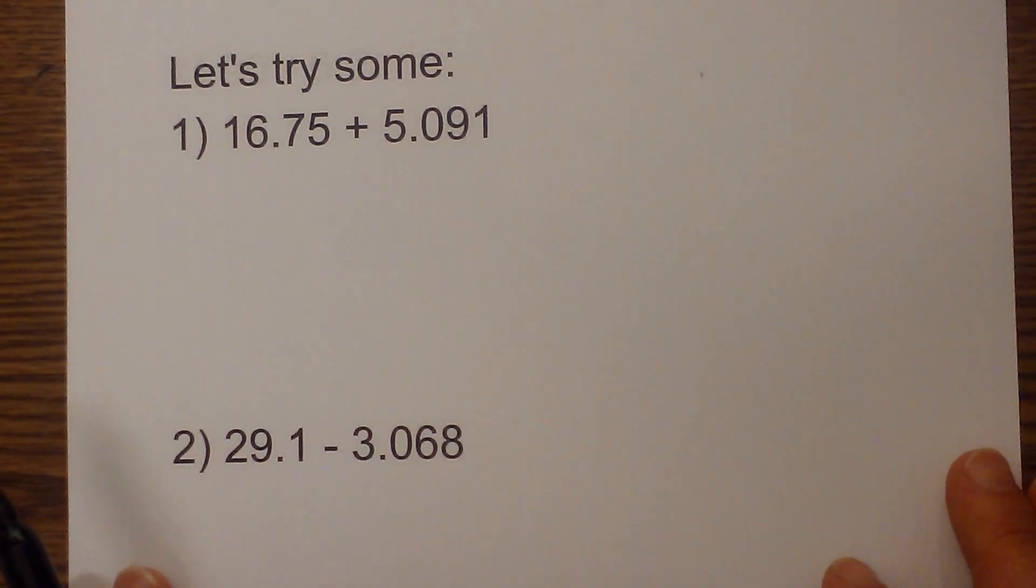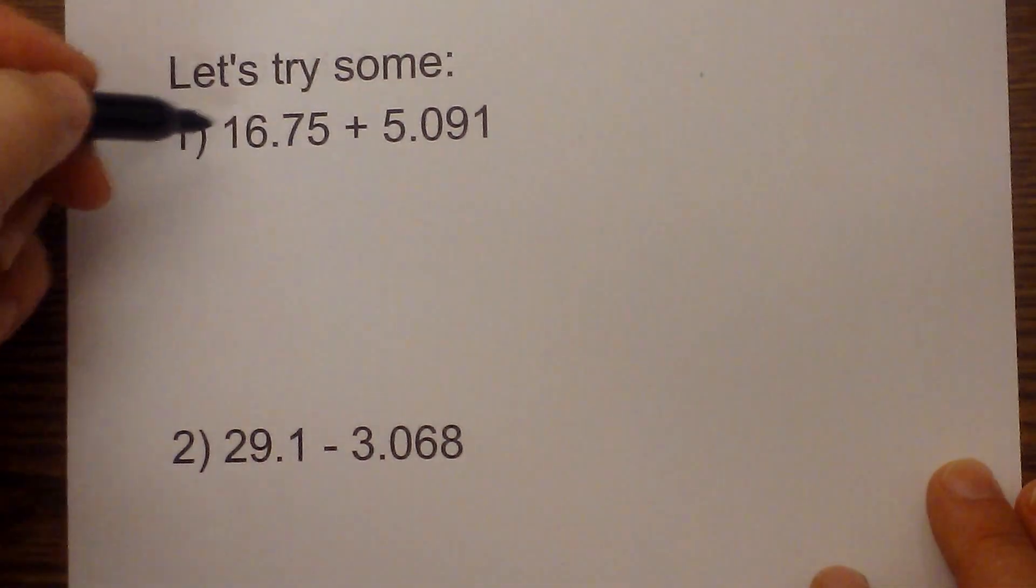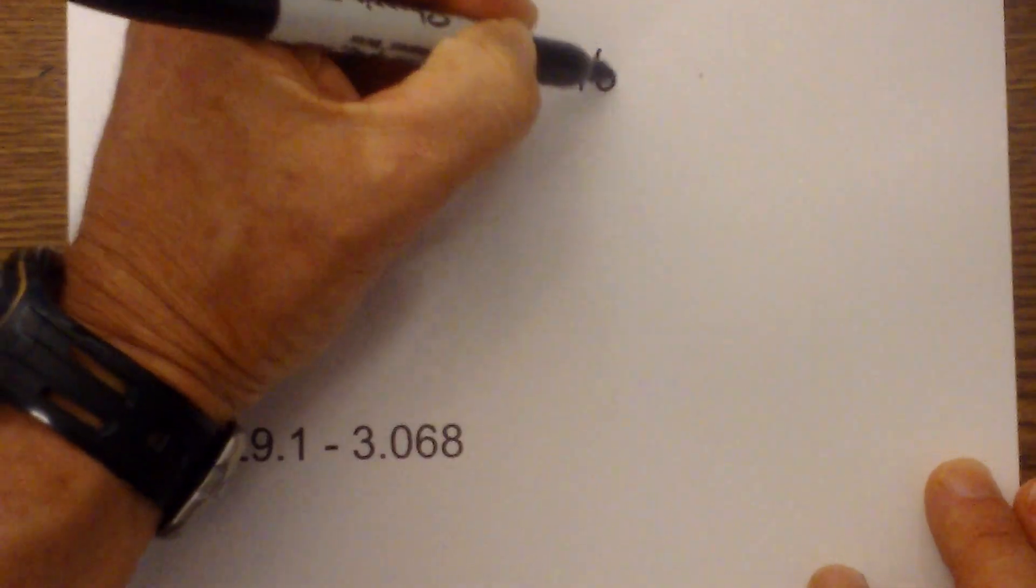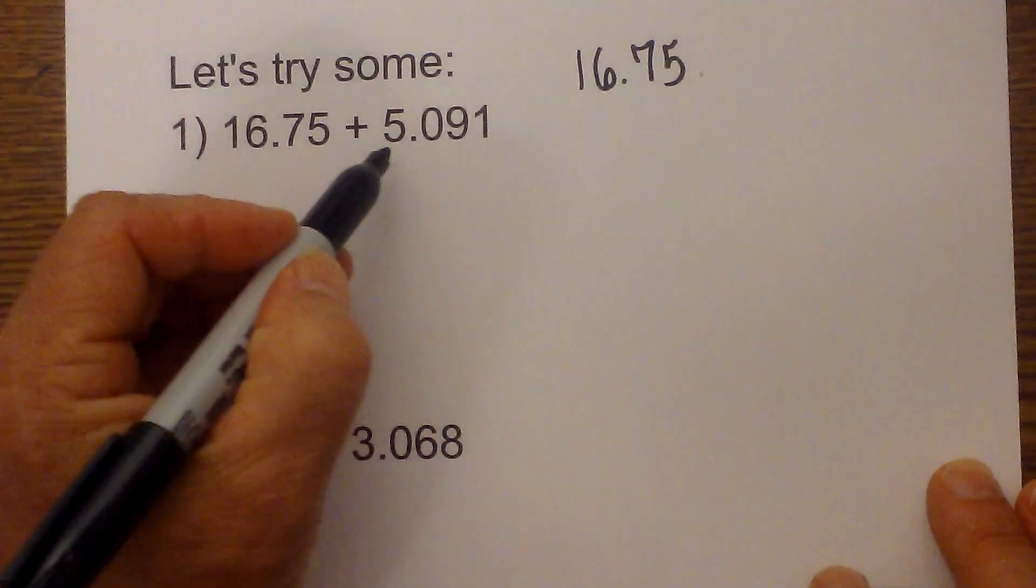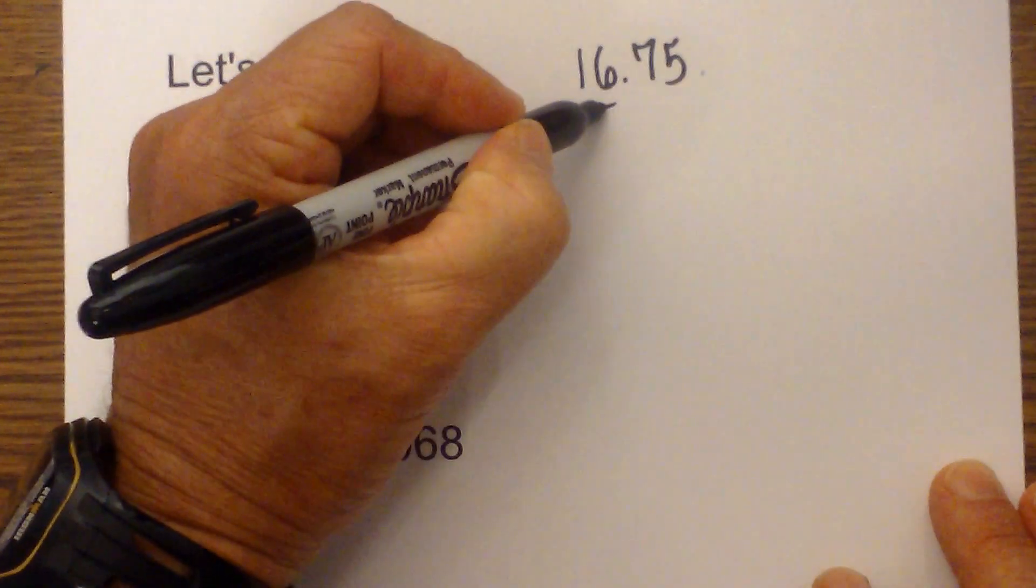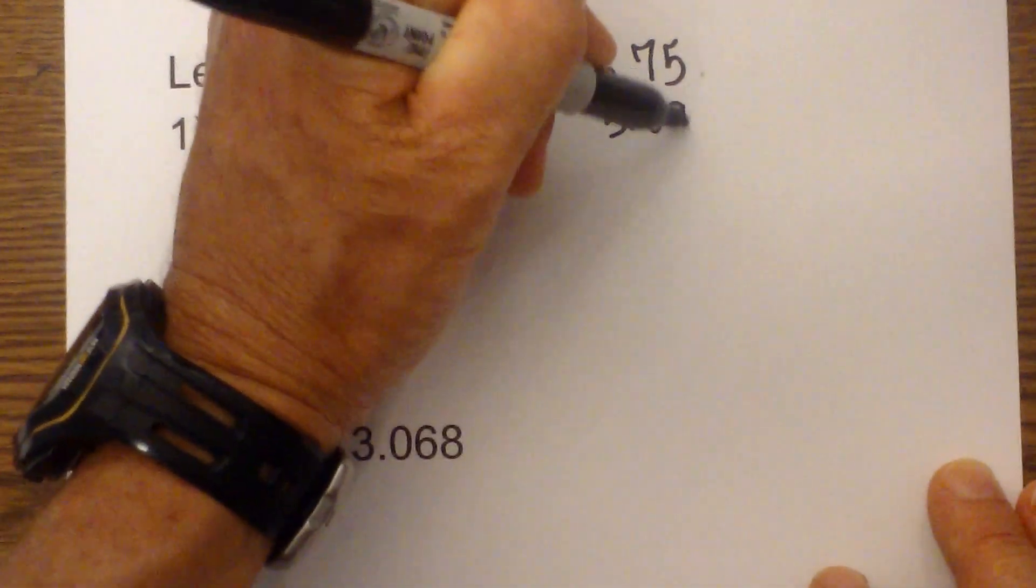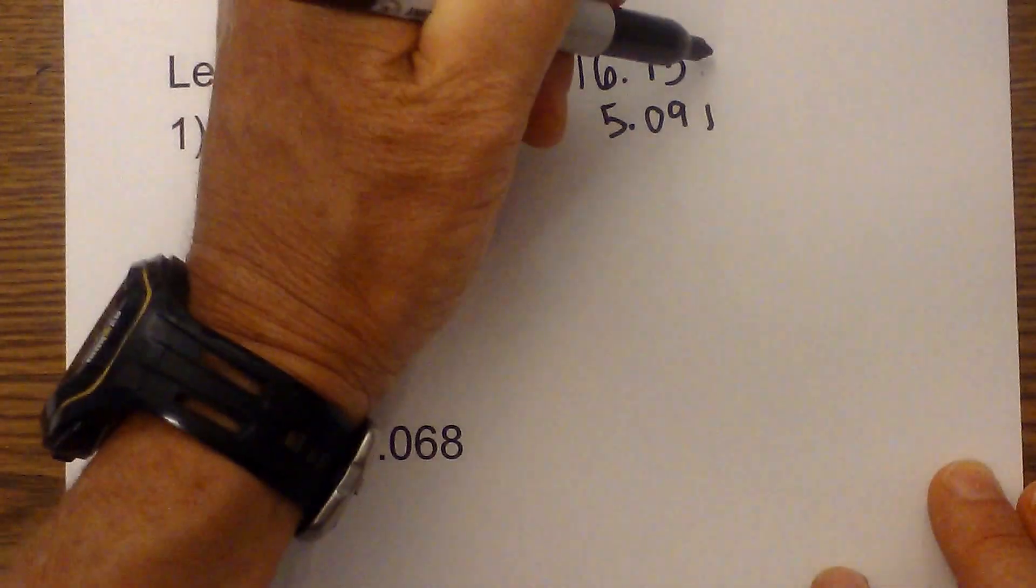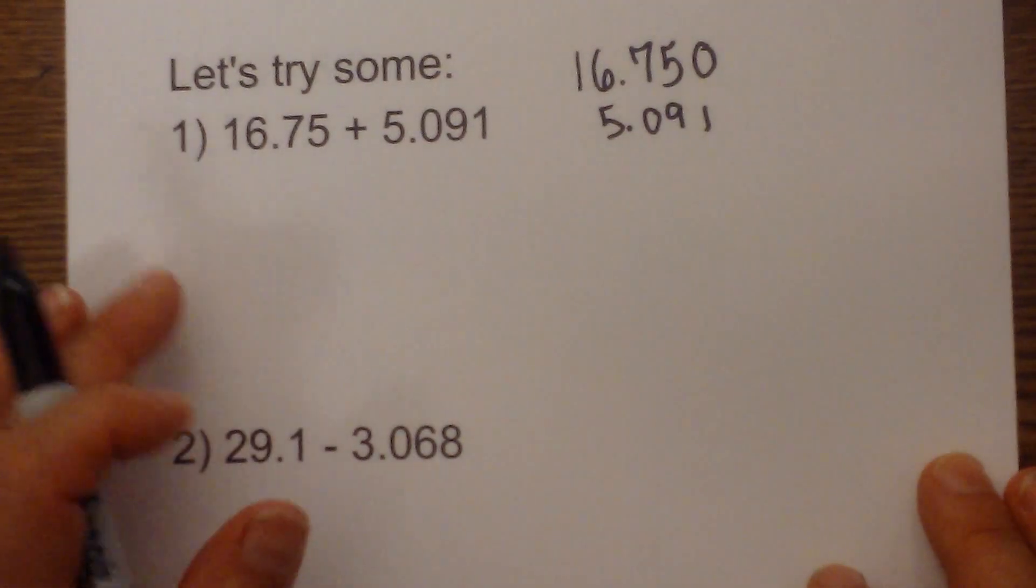Okay, number one we have 16.75 plus 5.091. I'm going to rewrite it in a form that makes it a little bit easier and I can line the decimals up. So now 5.091, I need to line the decimals up, so it would be zero nine one, and then I'm going to add a zero here as a placeholder to make it a little easier to see.